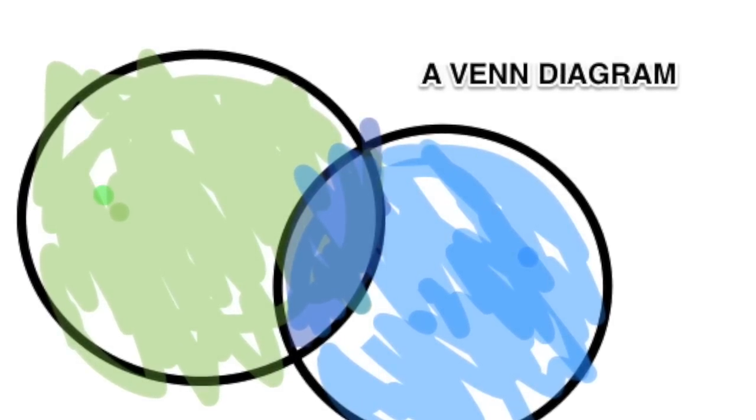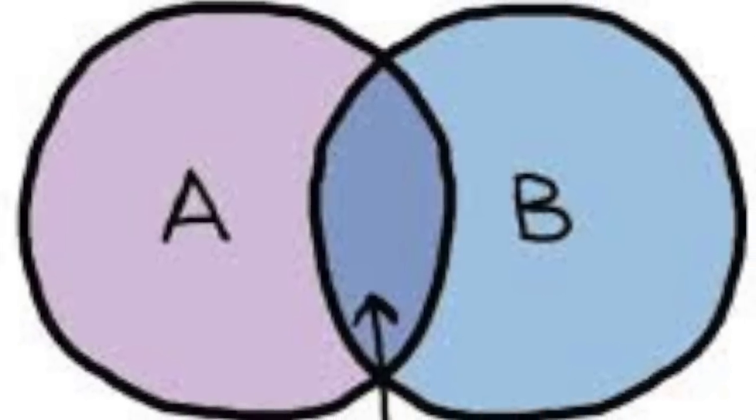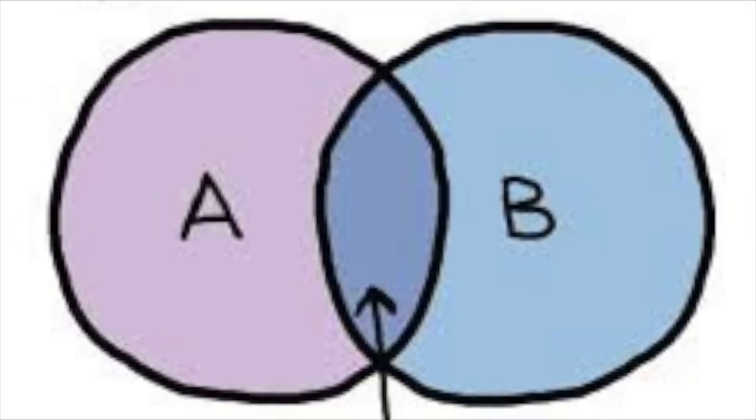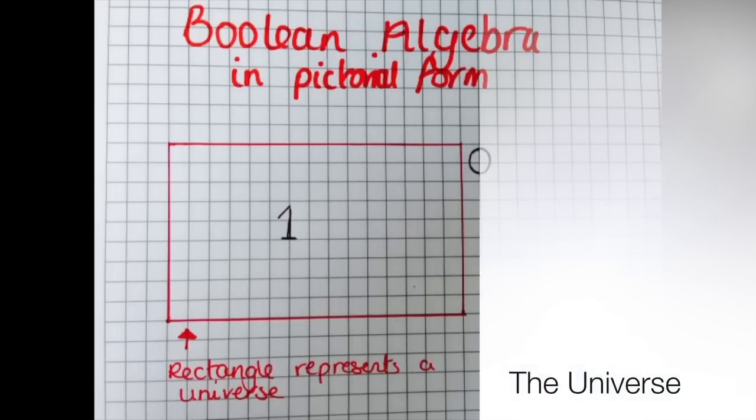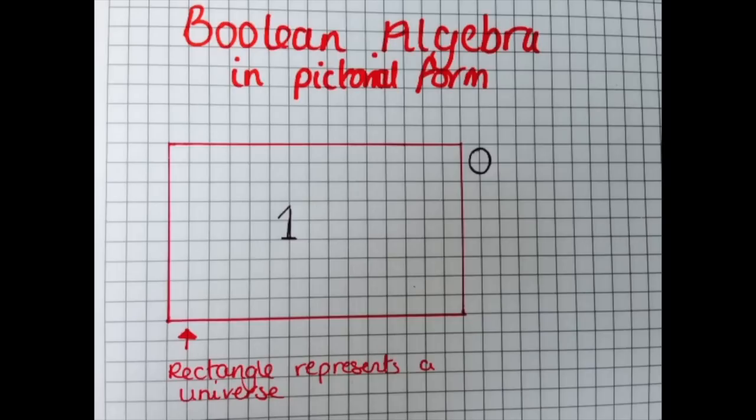The Venn diagram illustrates algebra applied to classes. If the area within the rectangle represents the universe class, then it is designated by 1. The area outside the rectangle is not a member of this universe class and is called null class, designated by 0.